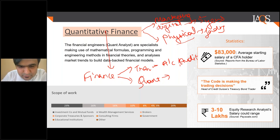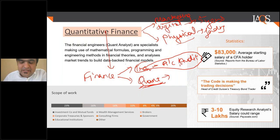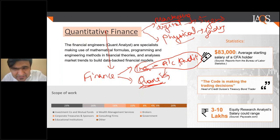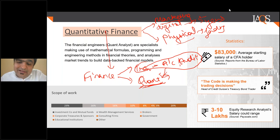The basic meaning of Quant Finance is applying complex mathematical models to the financial world. It is so strong now that it is very heavily used even in the basic stock markets and other decision-making processes. Code is making trading decisions these days.